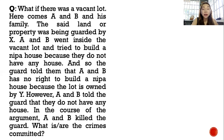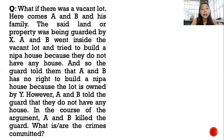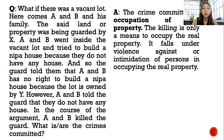Example: There was a vacant lot being guarded by X. A and B entered the vacant lot and tried to build a nipa house. The guard told them they had no right to do so because the land belonged to someone else. A and B said they had nowhere to live. An argument ensued and A and B killed the guard. What crime was committed here? It is under Article 312. The crime is occupation of real property, and the killing is only a means to occupy the real property — it falls under violence against or intimidation of persons in occupying real property.